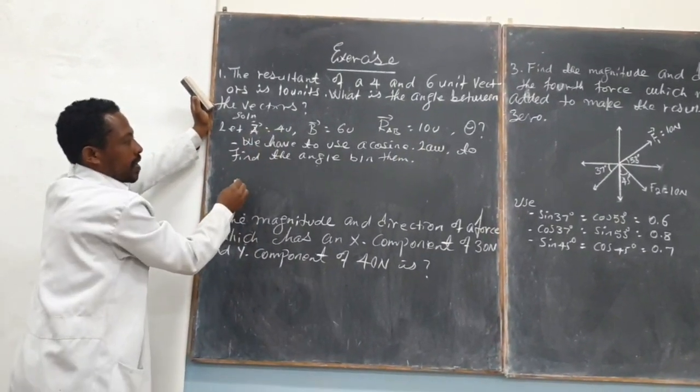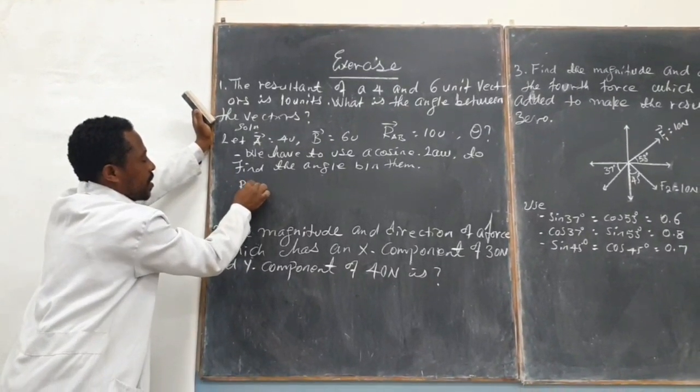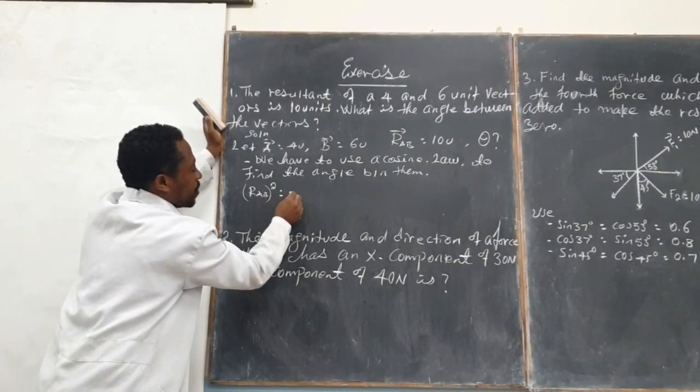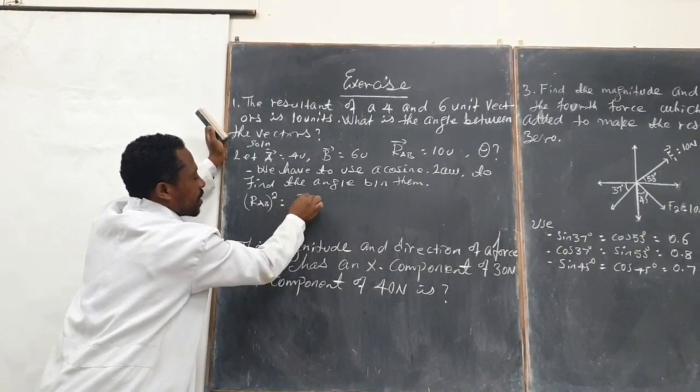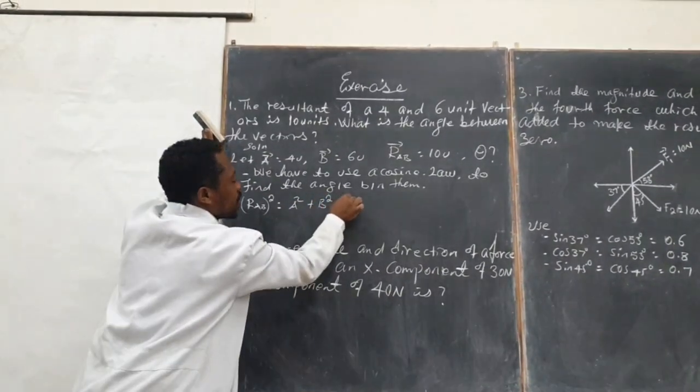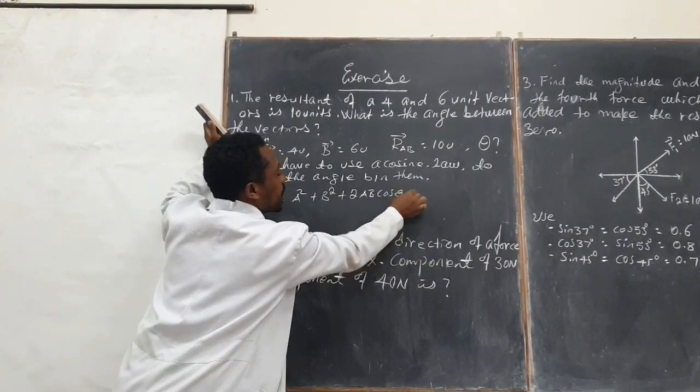Now look, R_AB squared is equal to the magnitude of vector A squared plus the magnitude of vector B squared plus twice the magnitude of AB times cosine of theta.